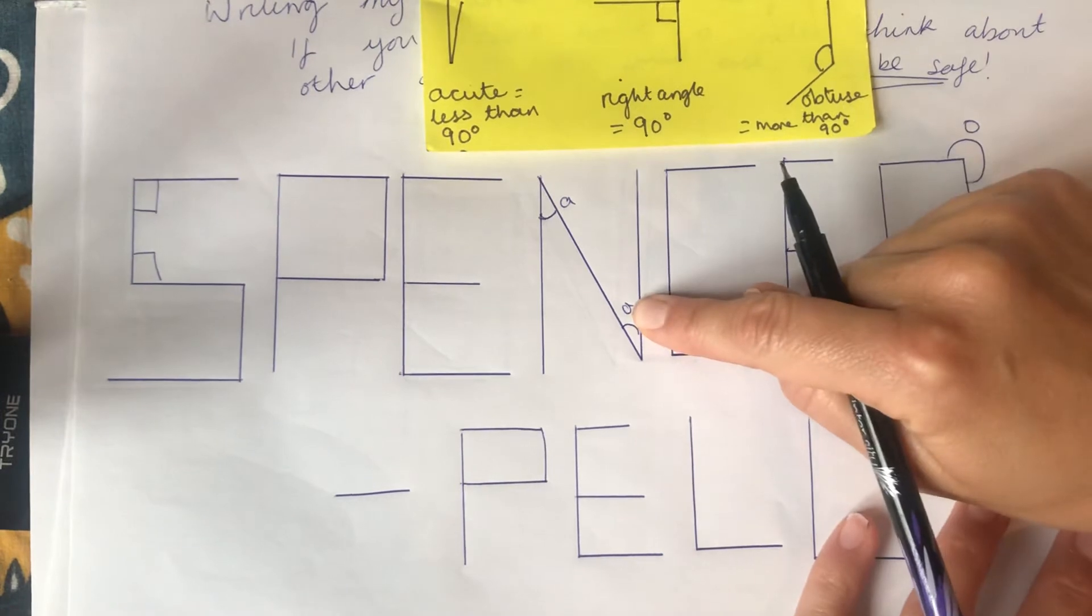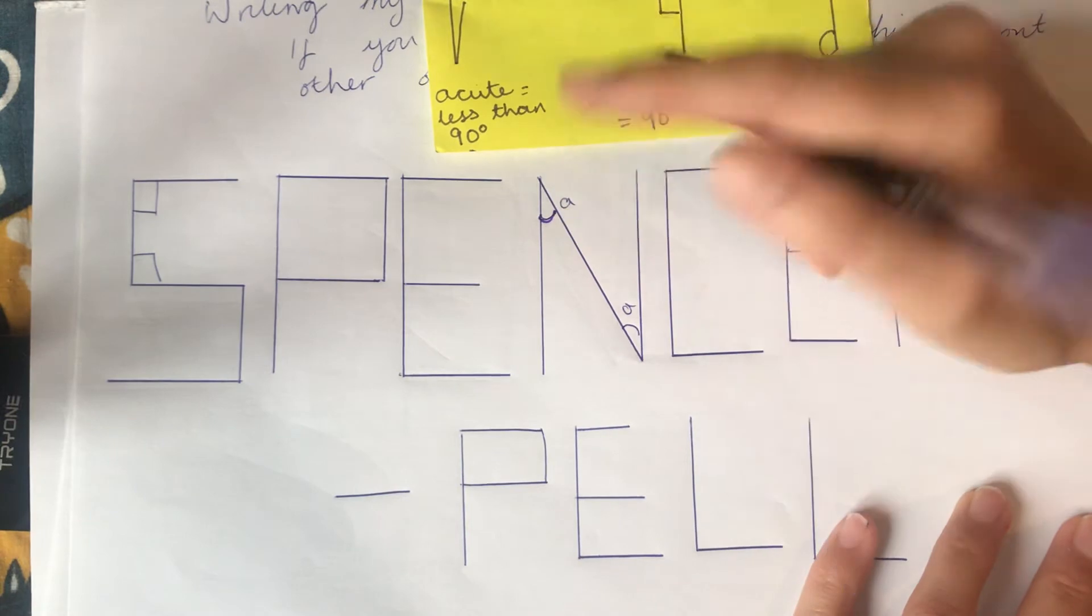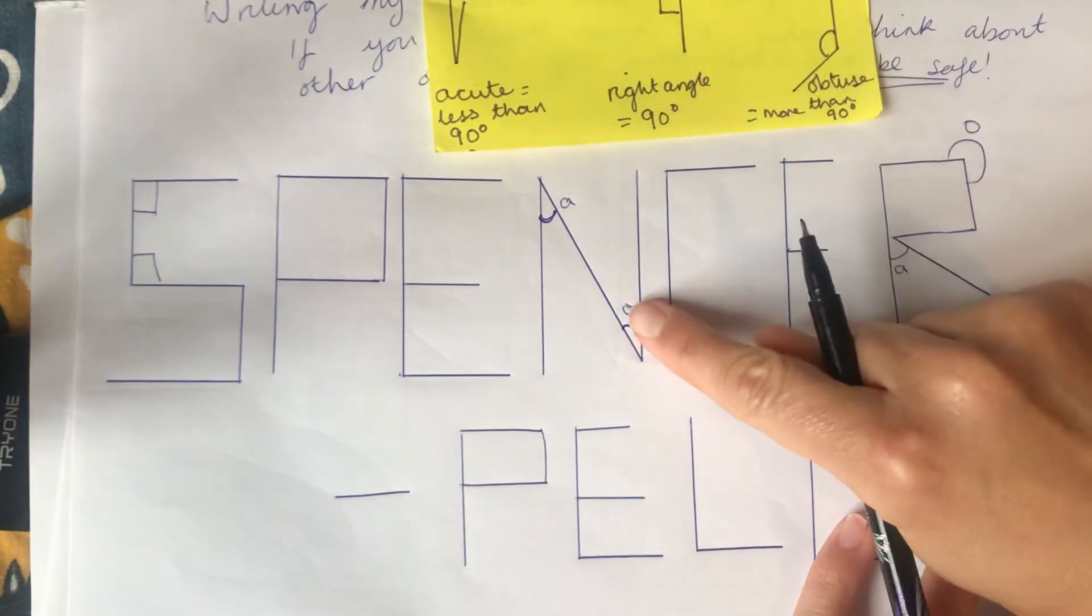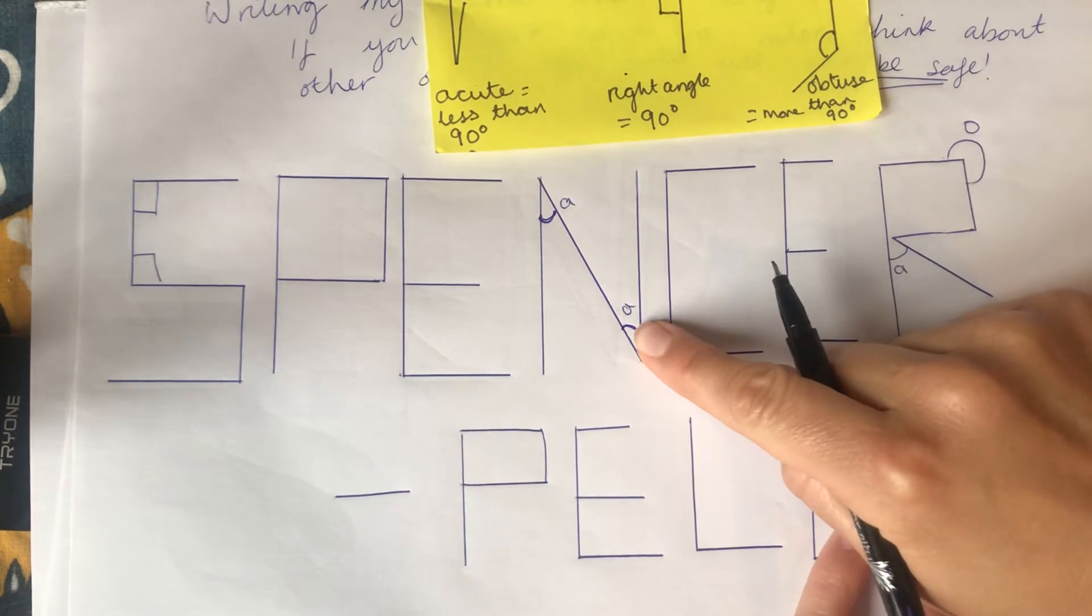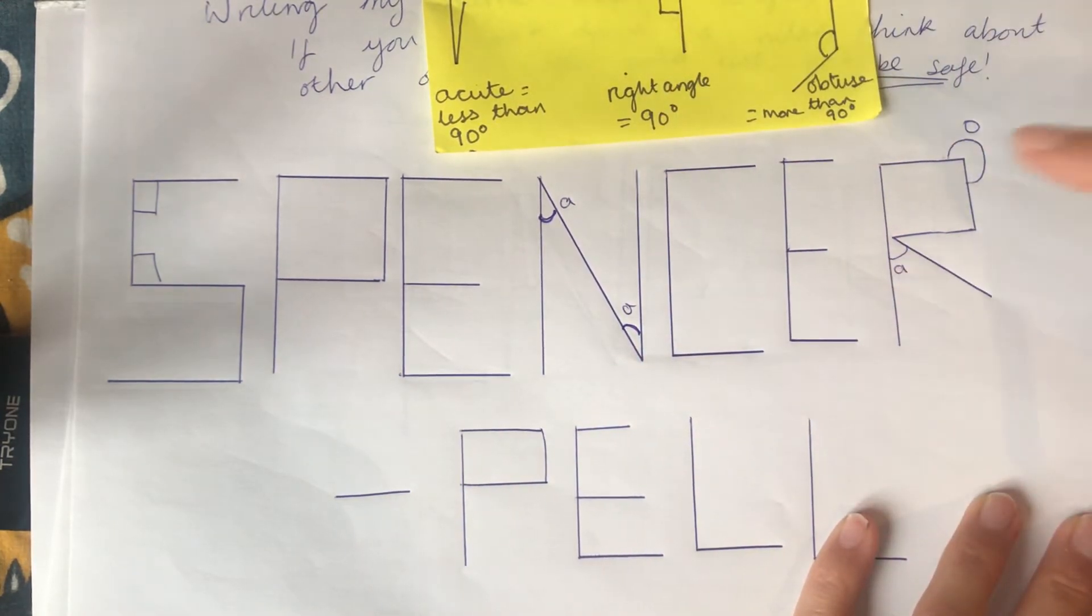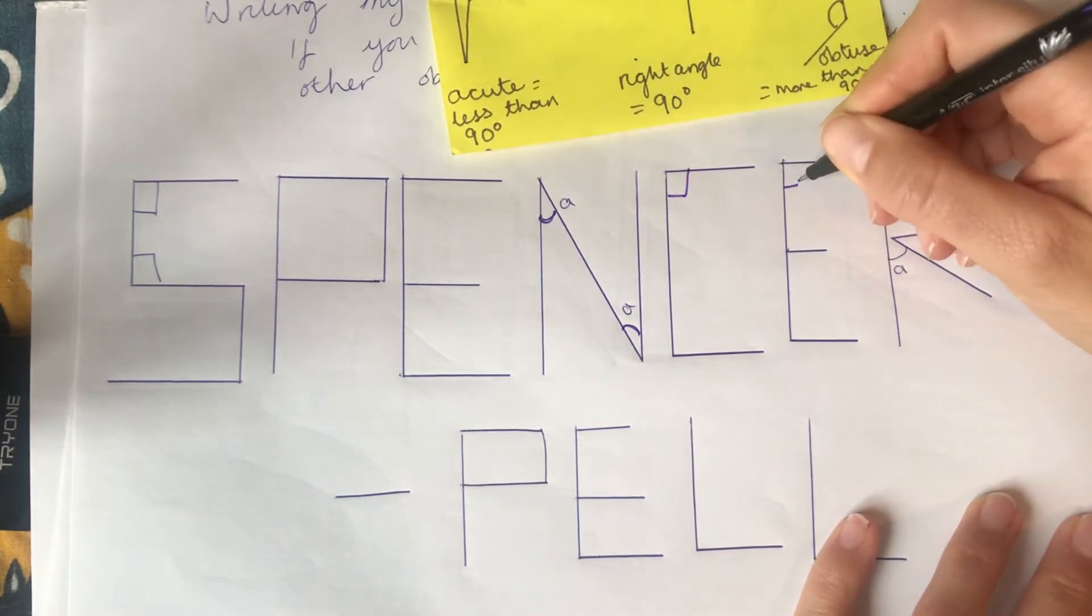So because I have an N in my name I've also got these really small angles here, and I have labelled them with A because they are acute, they are acute. There's another acute one. I've got plenty of right angles I could be labelling here, but you can see them all.